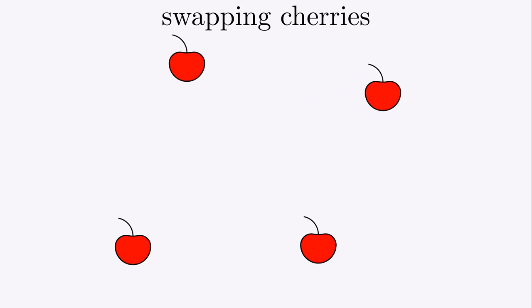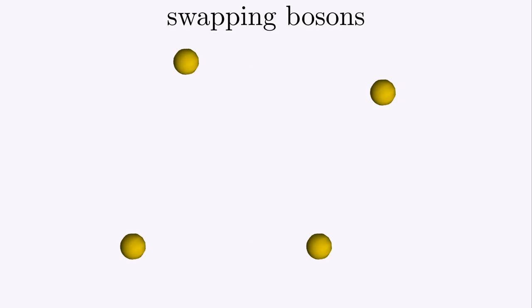Is there anything in the universe that does act like a number? Can we find or make any kind of perfect copies of anything? The answer is yes. When we discovered quantum physics in the 20th century, we found identical particles. These yellow balls are particles called bosons. They don't really look like this, but at least with this picture you can see where they are.